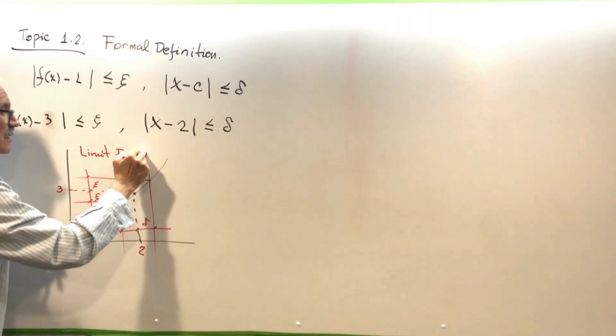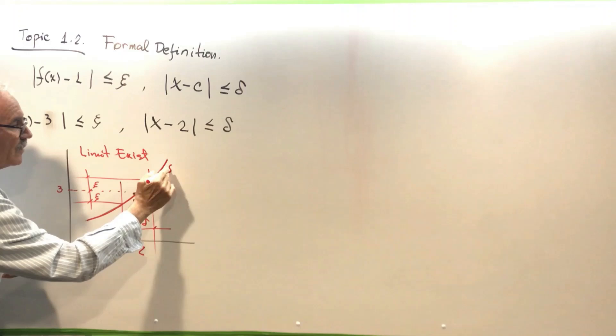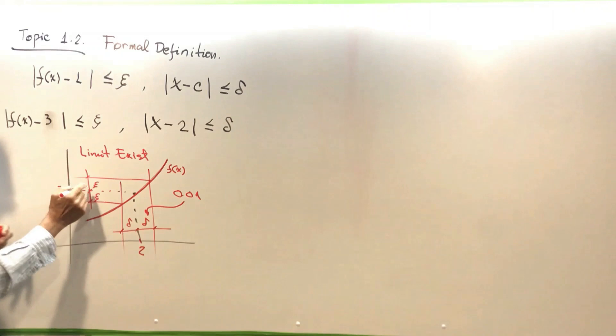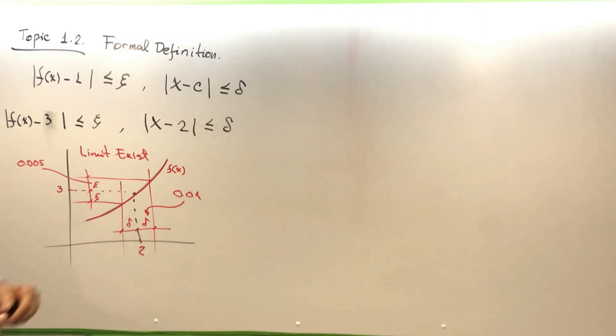It's a very simple and logical interpretation of the problem. We have a function f(x). If delta equals 0.01 and epsilon equals 0.005, or vice versa — comparable, very small numbers — then the limit exists. Now, how do we decide that the limit does not exist based on this interpretation?